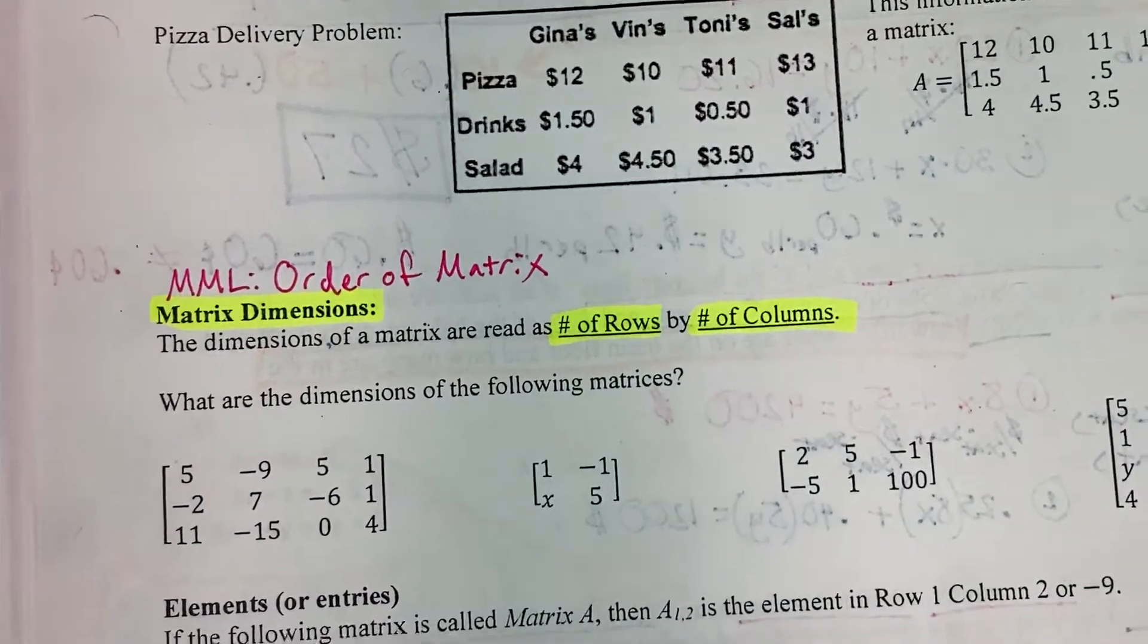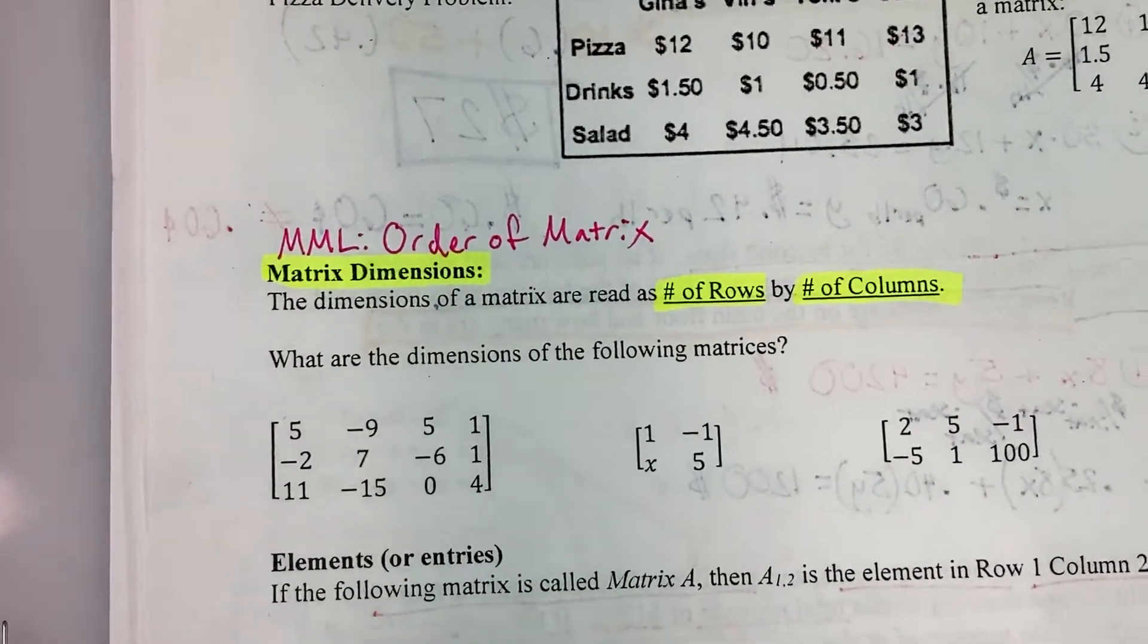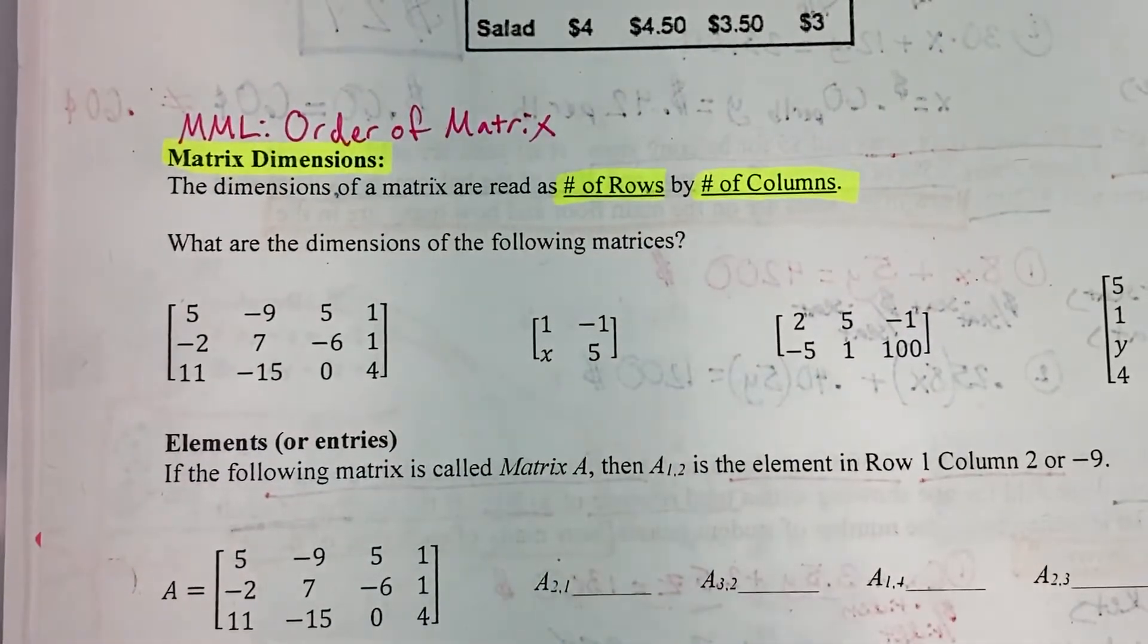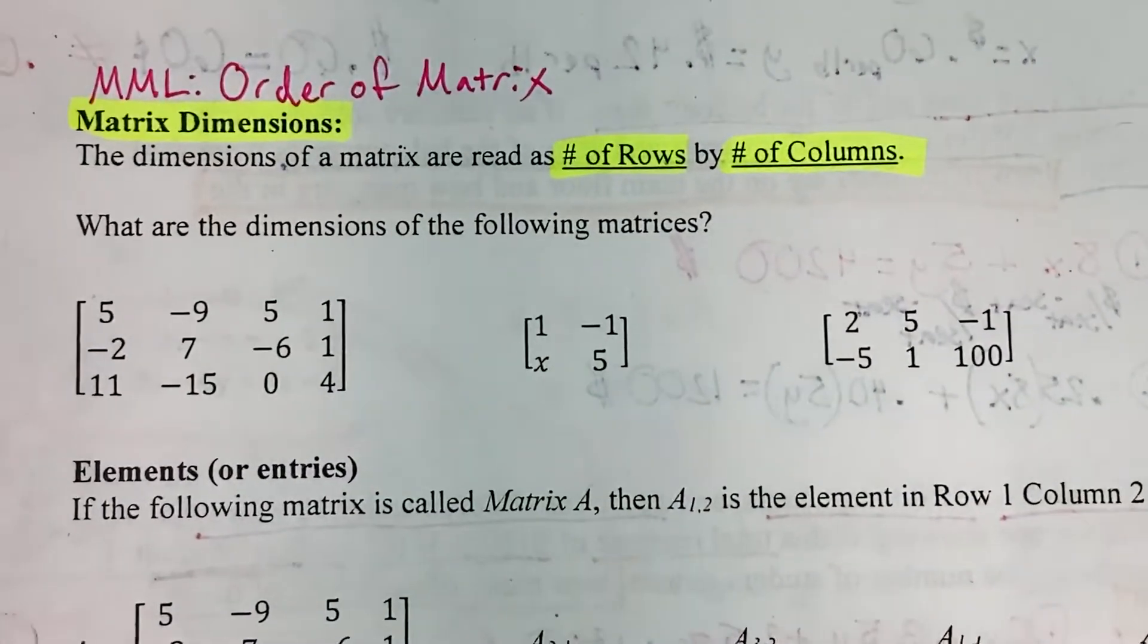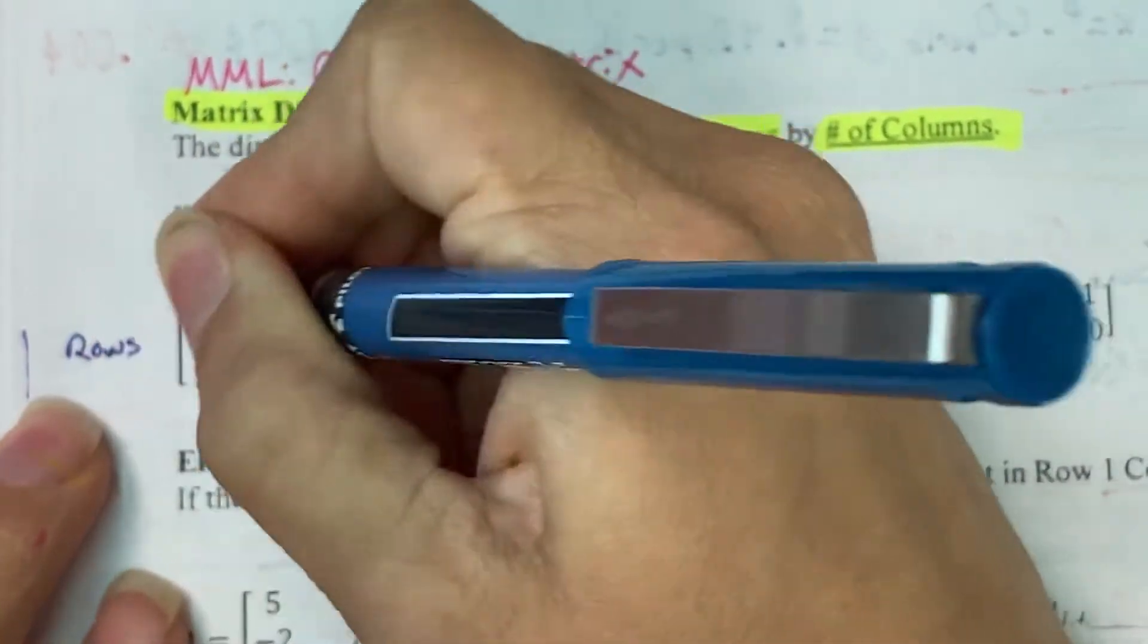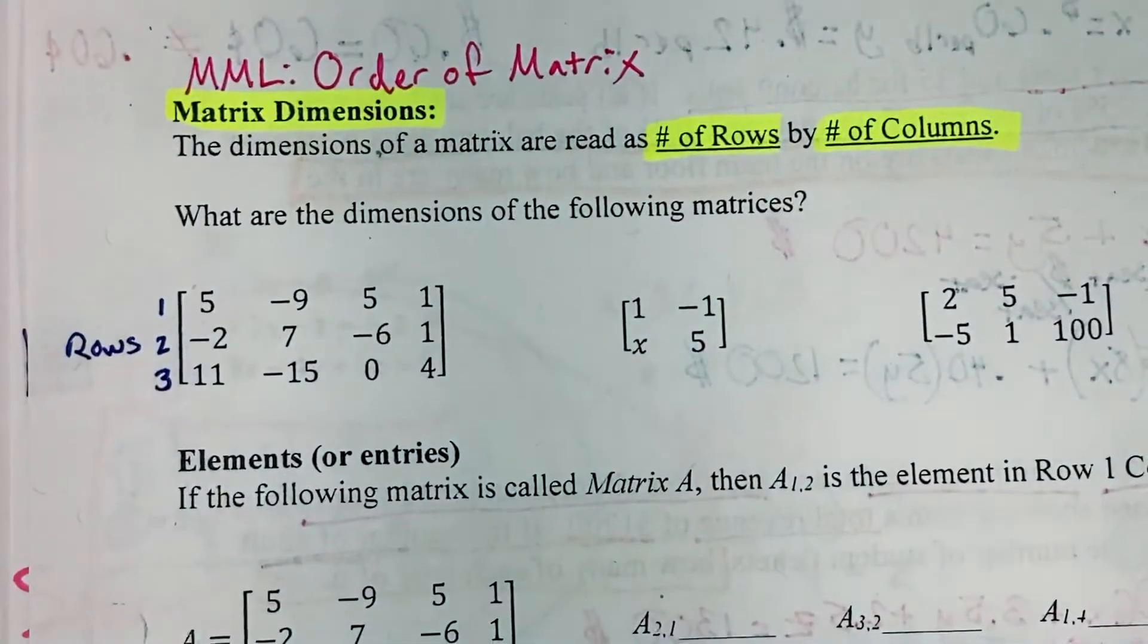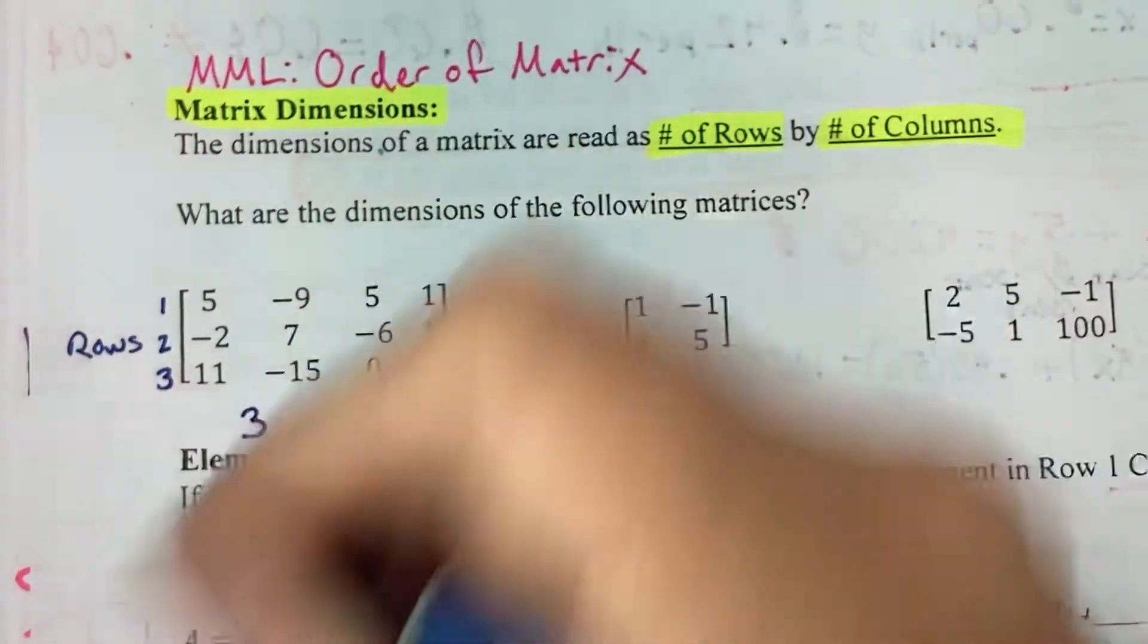So in these first few problems, what are the dimensions of the following matrices? So since the dimensions are rows by columns, first I'm going to count the number of rows. So the rows go horizontally. This would be row 1, row 2, and row 3. So there are 3 rows.